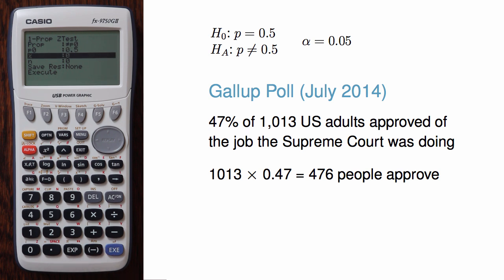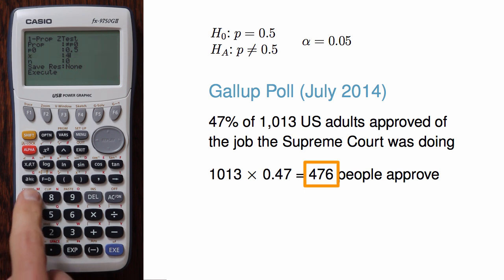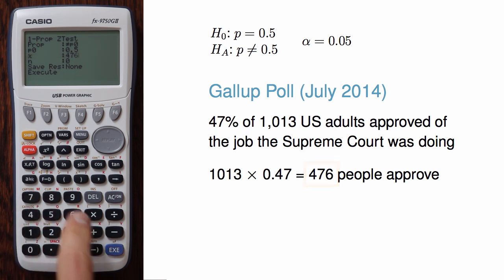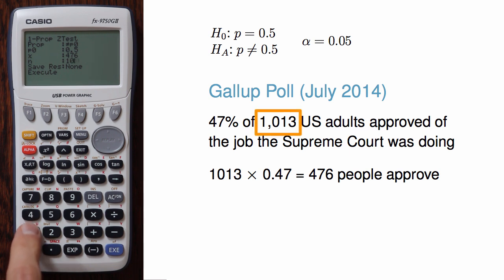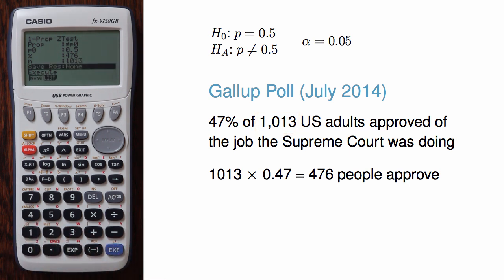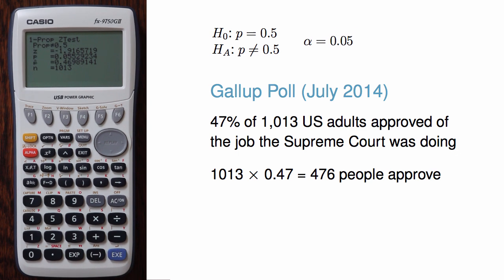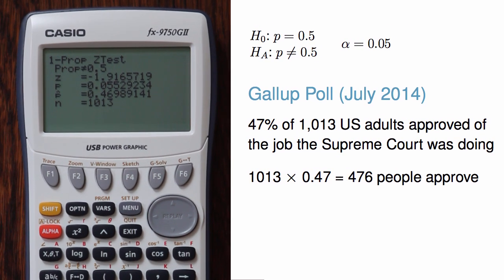We also need to specify how many people's responses aligned with the category we are interested in — approval — which is 476 people in our sample. Finally, we specify the sample size, which is 1,013 adults. Once we've entered the data, we can hit execute one more time to get the results of the hypothesis test.